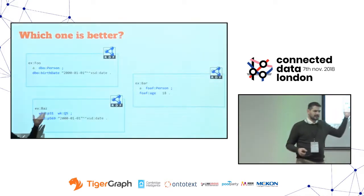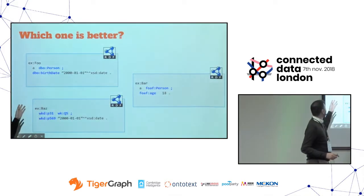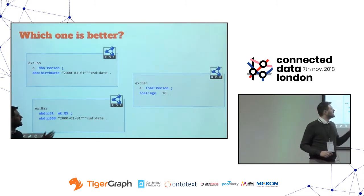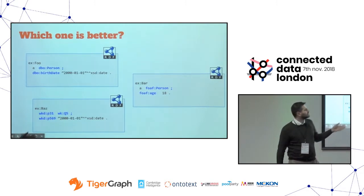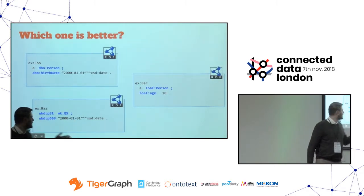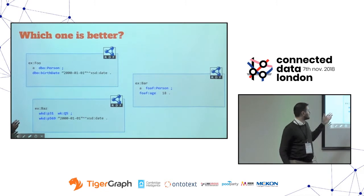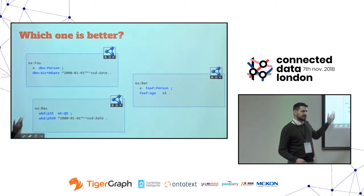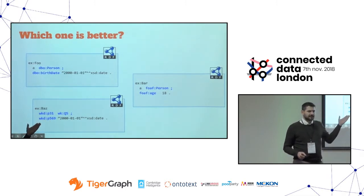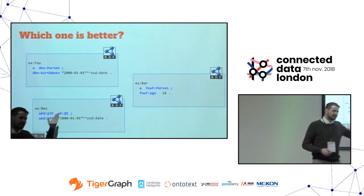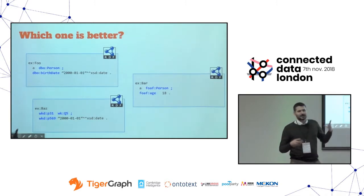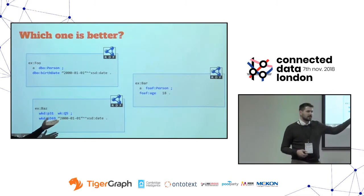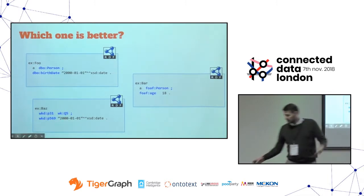For example, we have three snippets: foo, which is a DBpedia person with a DBpedia birth date of 1st January 2000; bar, which is a FOO person with FOO age 18; and buzz, which has Wikidata properties P31 Q5 (human) and P569 (birth date). Is any of these better than the other? People used to consuming DBpedia will find DBpedia more useful, and so on — it's not a straight answer.